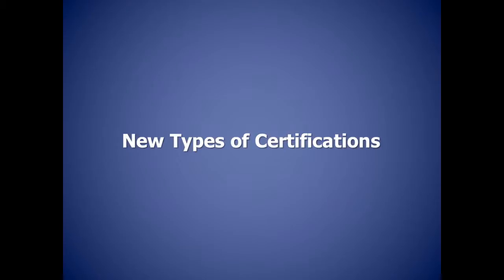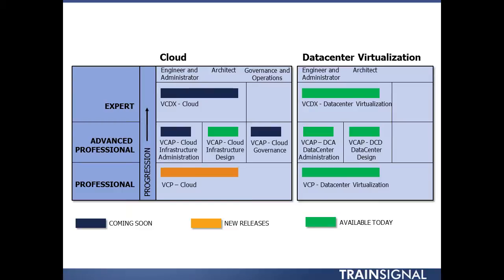Besides the VCP that's been around for many years, VMware has recently added many new certifications. On screen you can see them listed with a progression arrow from professional at the bottom, to advanced professional, to expert at the top — just like my certification pyramid. Starting at the bottom right, the VCP on data center virtualization is where everyone must begin. From there you can go up the data center virtualization stack to the VCAP-DCA or DCD, or move left to the VCP Cloud or VCP on desktop administration.